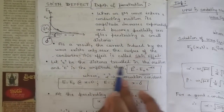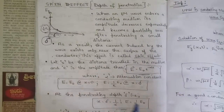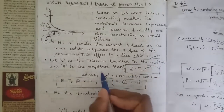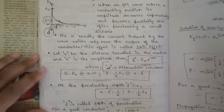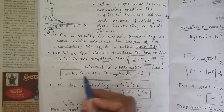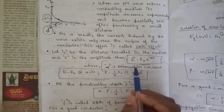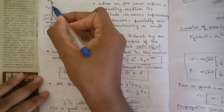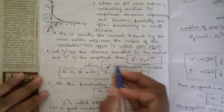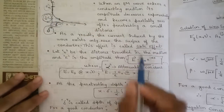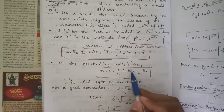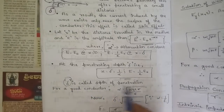Now let's derive the expression for depth of penetration. Let x be the distance traveled in the medium and E be the amplitude. The expression is E = E₀ · e^(−αx), where α is the attenuation constant. At x = 0, E = E₀. At x = δ (depth of penetration), E = (1/e) · E₀. From this we get the relation δ = 1/α.